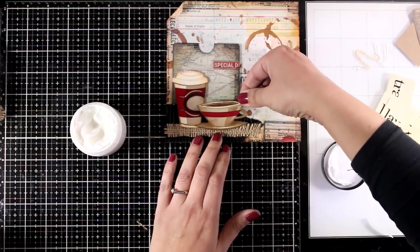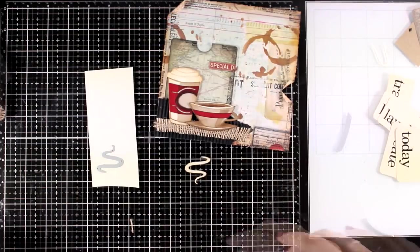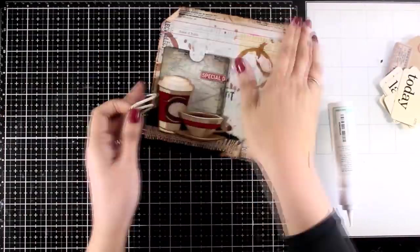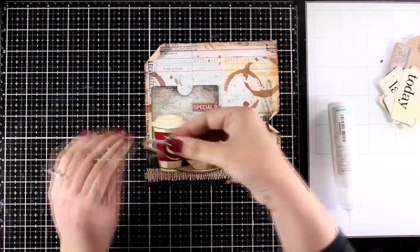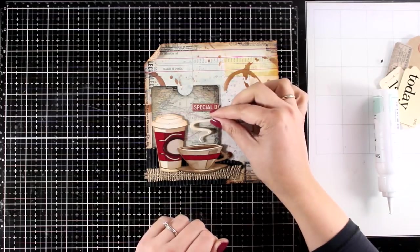Now about the steam I did use the die to cut it out many times from the same vanilla cardstock and I did stack one on top of the other. This way I ended up having a steam that looks more like a chipboard, nice and thick.